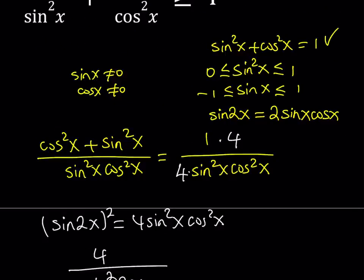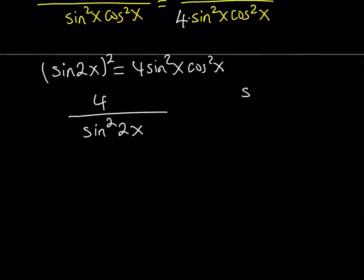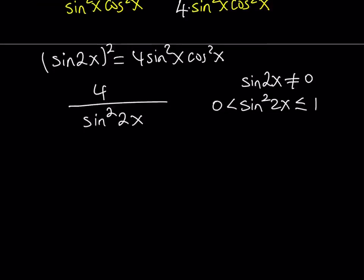Now, we said that sine squared x is always between 0 and 1. Of course I have to make sure that sine x does not equal 0, so I'm going to exclude 0 from here. So in this case I can safely say that if sine 2x does not equal 0, then sine squared 2x is going to be between 0 and 1. 0 is not going to be included because sine 2x does not equal 0.